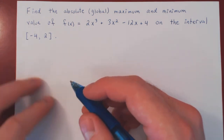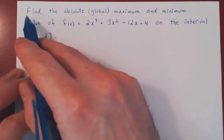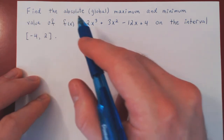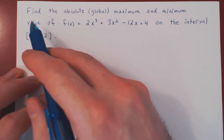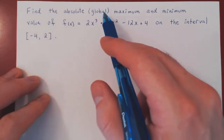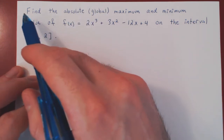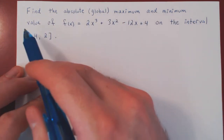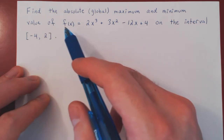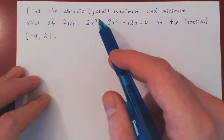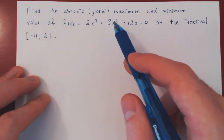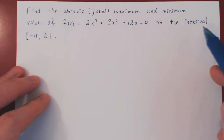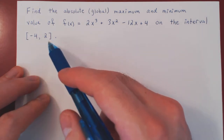Here's the question. We want to find the absolute — now a synonym of absolute is global, so these two words are interchangeable. We're asking to find the absolute maximum and minimum value of the function f of x equals 2x cubed plus 3x squared minus 12x plus 4 on the interval negative 4 to 2.